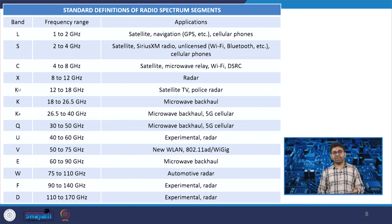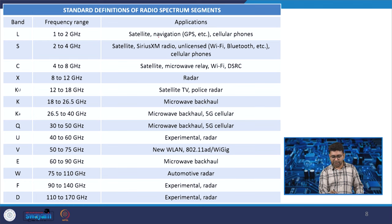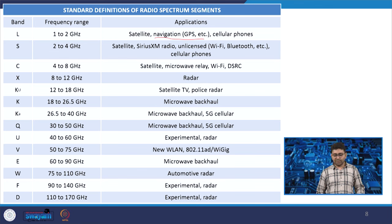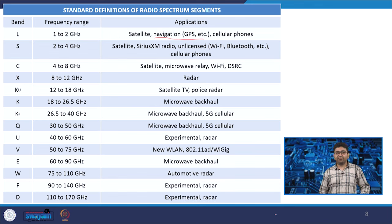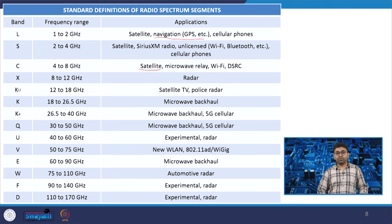These bands can also be designated by letter. L band (1 to 2 GHz) is used for navigation and GPS — all GPS standards and cellular phones still use it. S band is used for Wi-Fi, Bluetooth, ISM band, and satellite communication. C band (4 to 8 GHz) is used for satellite, microwave relays, Wi-Fi, and DSRC — mostly related to satellite communication. X band is dominated by radar applications.